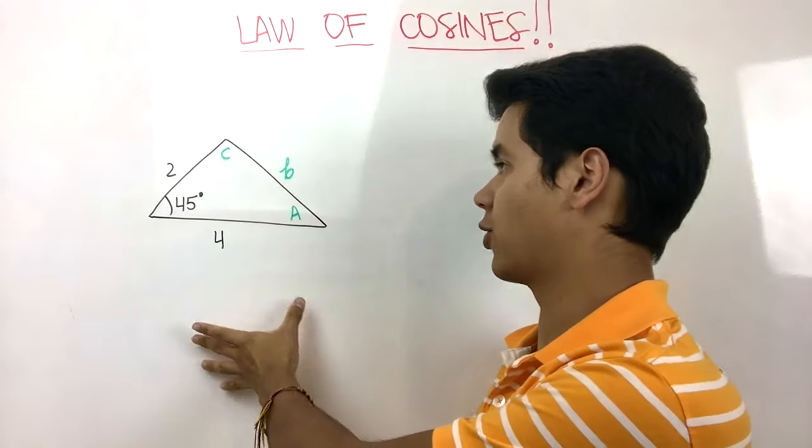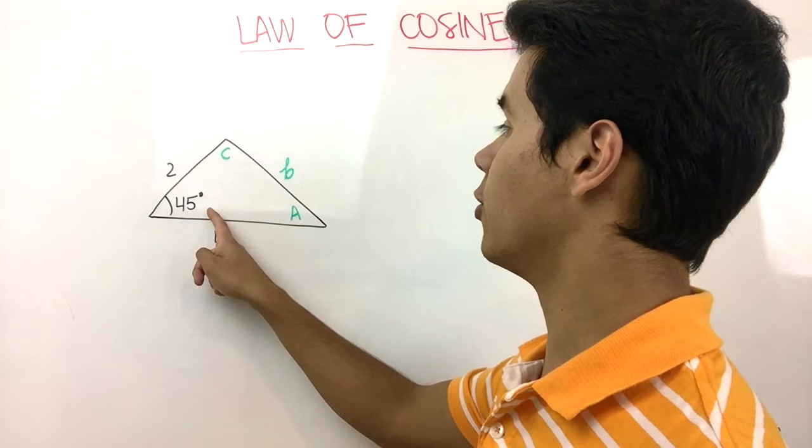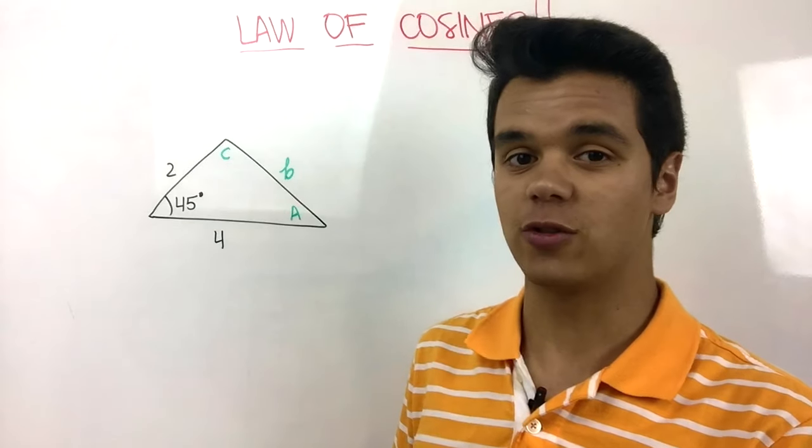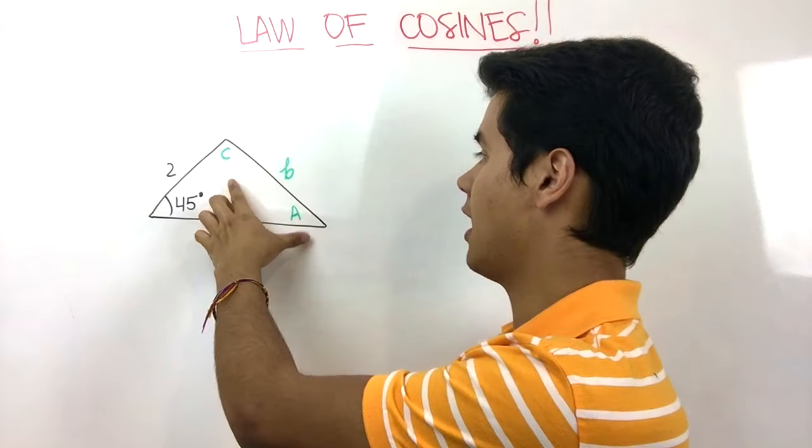For the example, we have the following triangle: we have a 45-degree angle, we have a side that's equal to 2, and we have another side which is equal to 4, and we have to solve for the angles A and C and the side B.